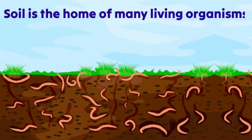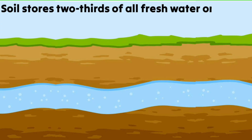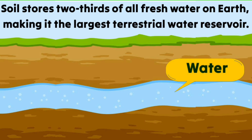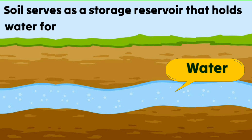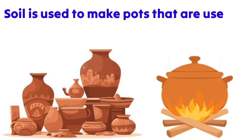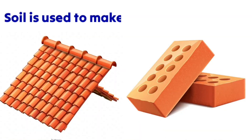Soil is the home of many living organisms such as insects, worms, and bacteria. Soil stores two-thirds of all freshwater on earth, making it the largest terrestrial water reservoir. It serves as a storage reservoir that holds water for plant growth.